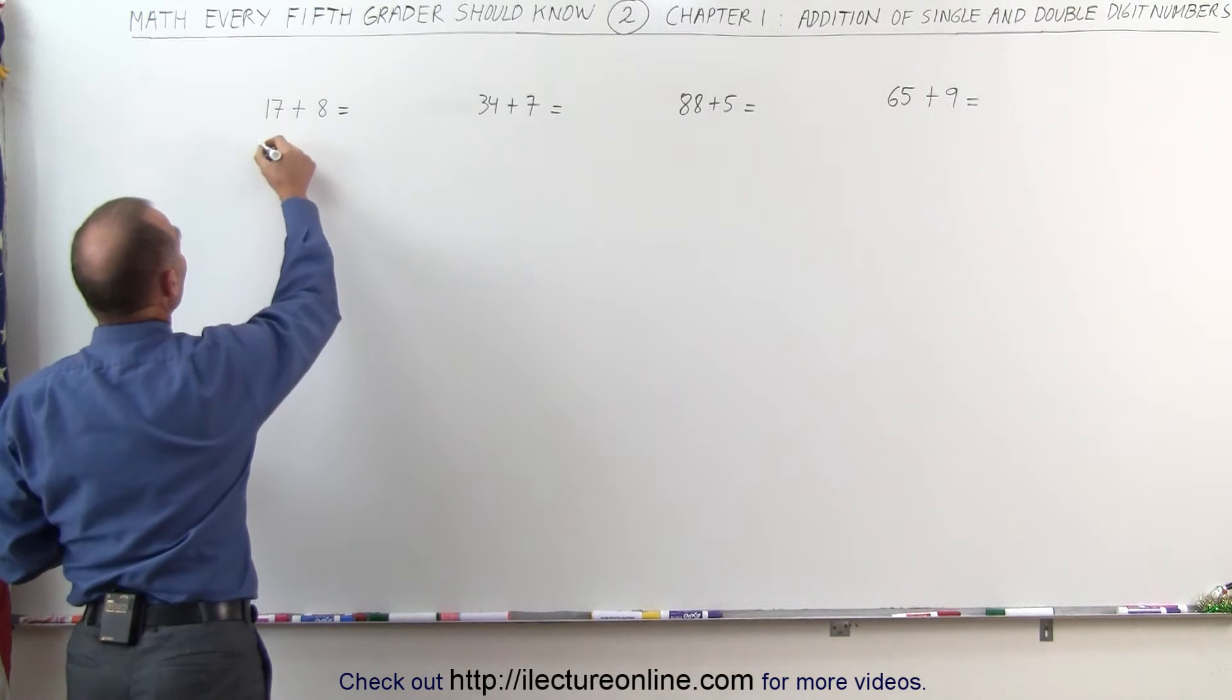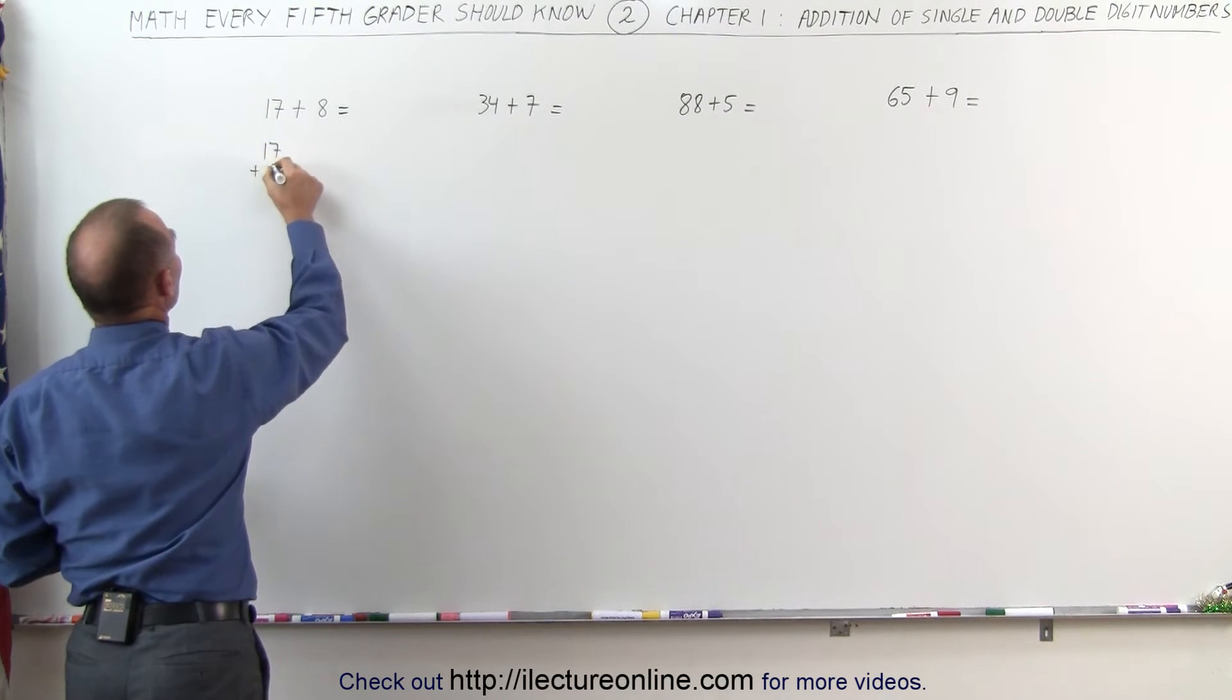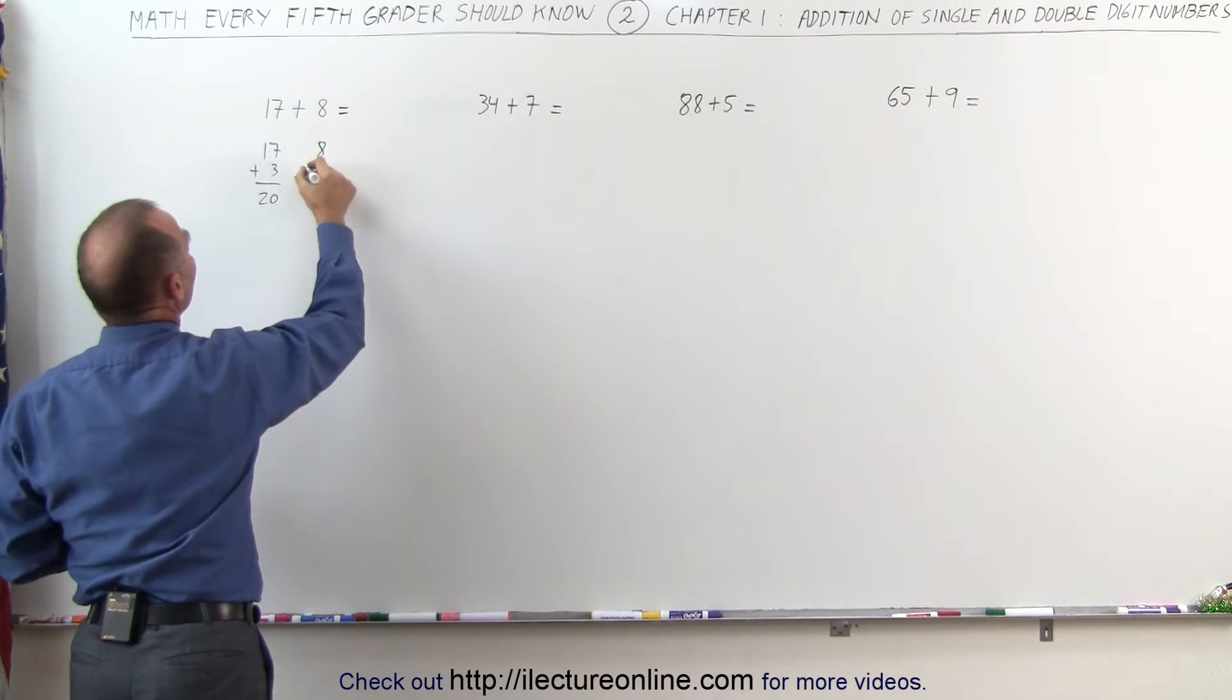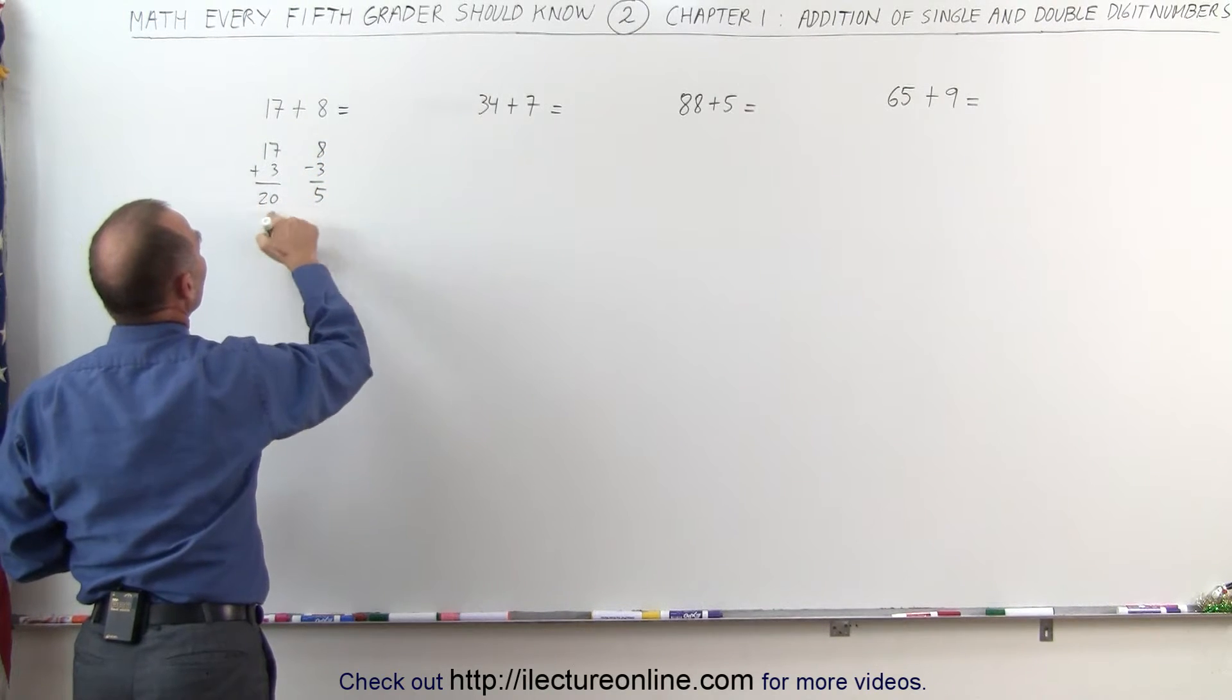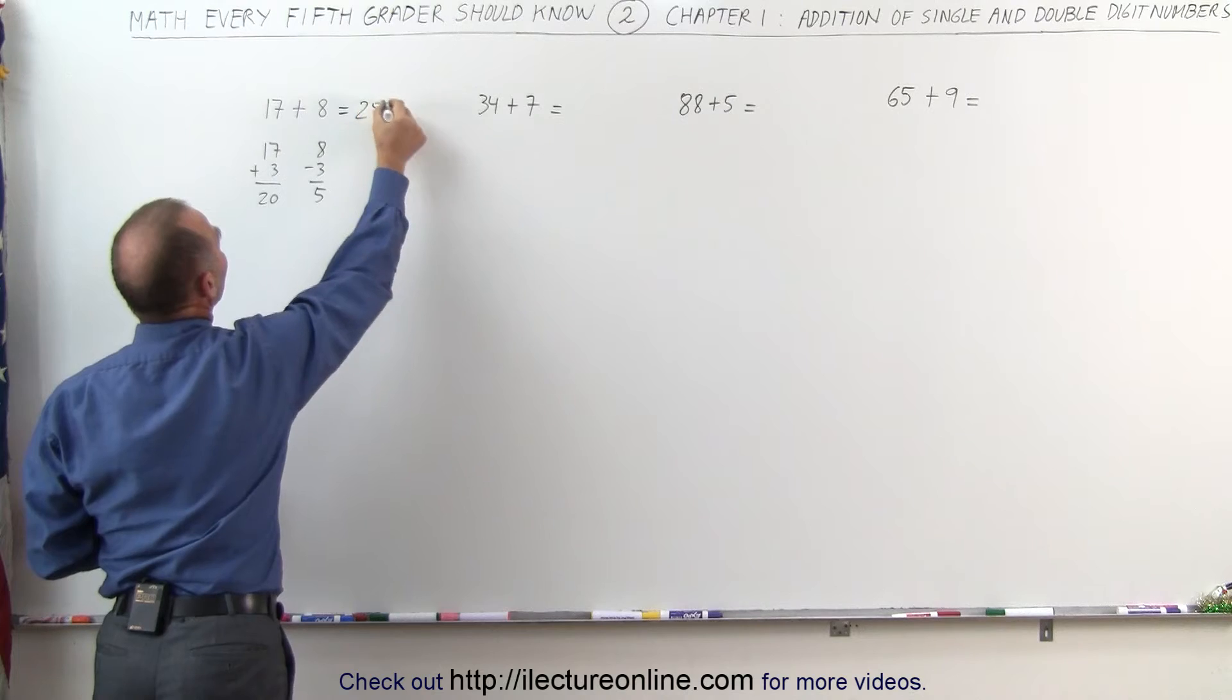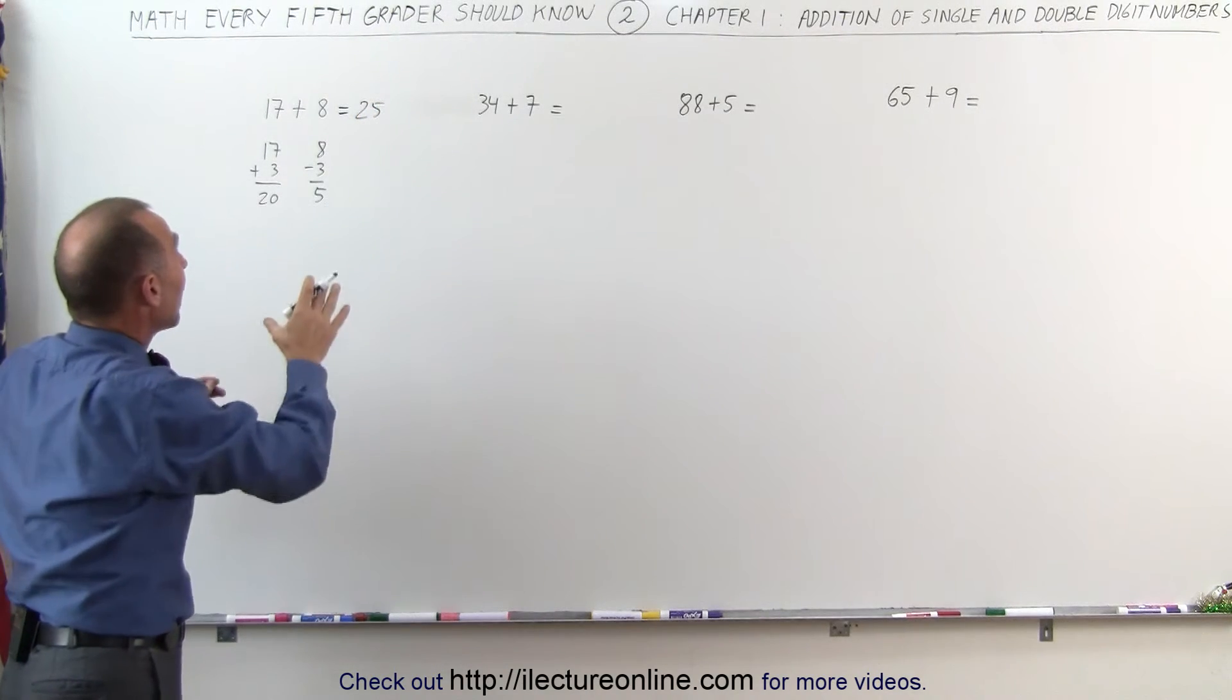So the methodology is this: 17 plus 3 gives us 20. So 8 minus 3 gives us 5. 20 plus 5 gives us 25. And that's how we look at it without even having to write it down.